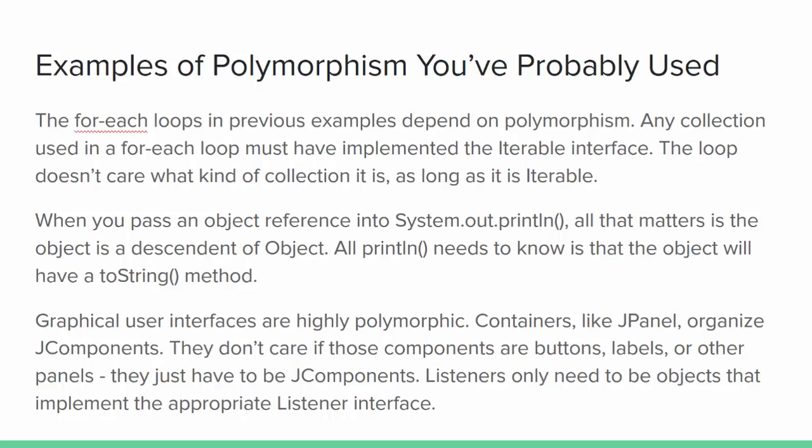The print methods in System.out can take object references, and that argument is of type Object — the same Object class that's at the root of all inheritance hierarchies — so any kind of class reference will be compatible. All the print method needs is something with a toString() method; it doesn't need to know anything else about the object. If you've ever worked with graphical user interfaces in Java, they're also highly polymorphic. Containers like JPanel collect and organize JComponents without caring if those components are buttons, labels, or other panels — they only need to know the objects have the methods all JComponents share. Event listeners in GUIs are also polymorphic: when you register a listener, the object only needs to be compatible with the appropriate listener interface for the kind of event you're listening for.